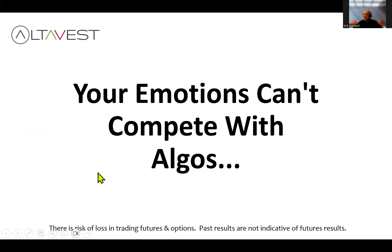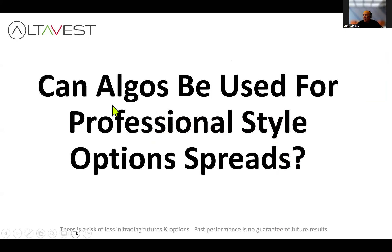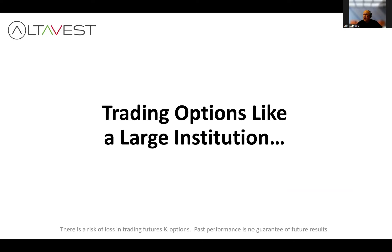We're going to look at emotions and why it's difficult to compete with algorithms. JP Morgan estimates systematic trading is over 90% of US equity trading volume, so we're competing against machines most of the time. The question is: how can we use these machines and these algos to trade professional-style options strategies? The answer is yes, we can — and we can do this like large institutions, hedge funds, large money managers, and even insurance companies.